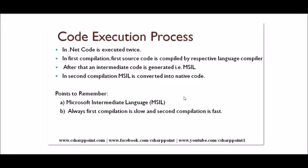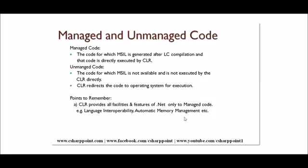One important point: the first compilation is always slow, and the second compilation is fast. This is because different programming languages have their own local language compilers which take some time. But once the code is converted to MSIL, CLR executes it faster. So we are done with the code execution process.